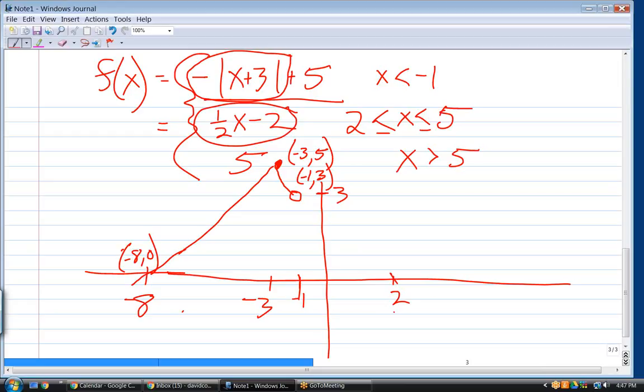So, this vertex comes at minus 3, comma 5. This point here comes at minus 1, comma 3. This other key point over here comes at minus 8, comma 0. So, we have every key point on that part of the function.